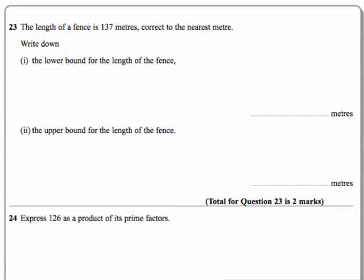Question 23. The length of a fence is 137 meters correct to the nearest meter. Write down the lower bound and the upper bound for the length of the fence. We've got 137 here and this has been rounded.